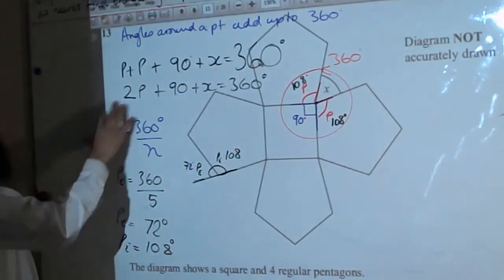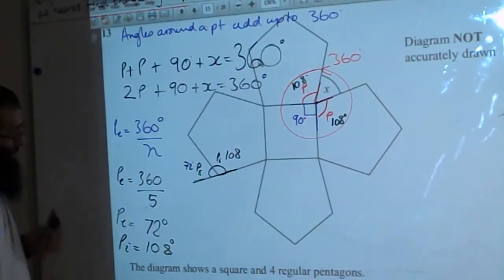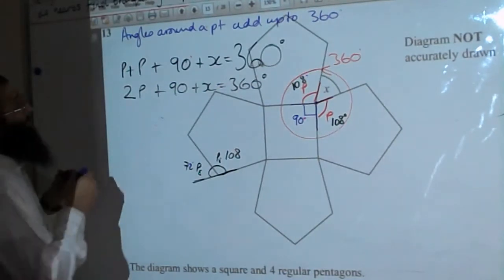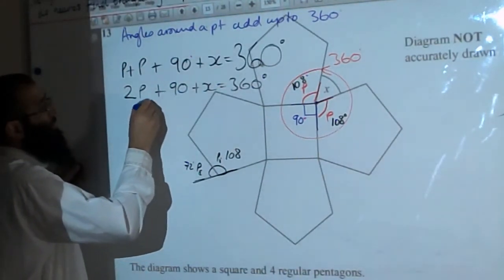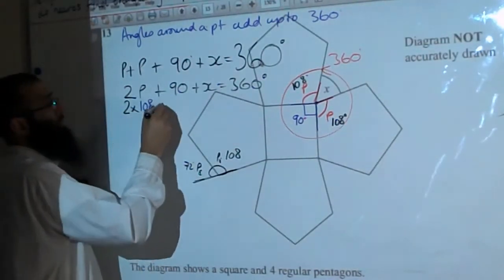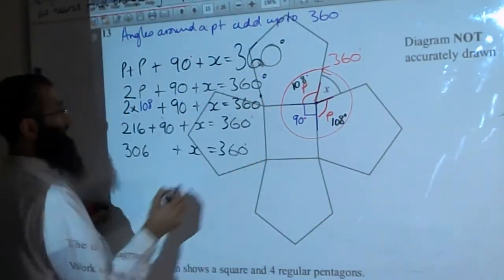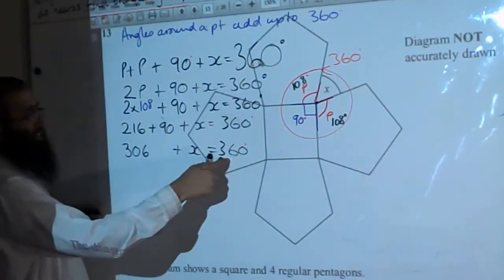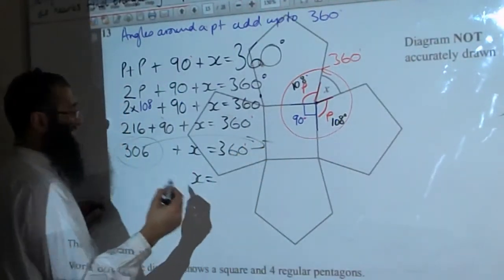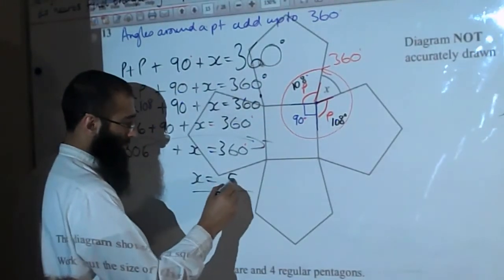Now substituting in: 306 plus x equals 360. So x equals 360 minus 306. What's the answer? x = 54 degrees.